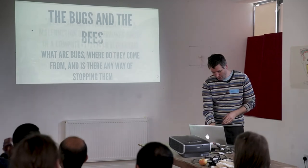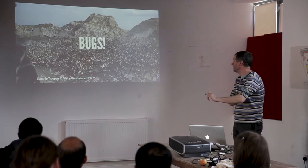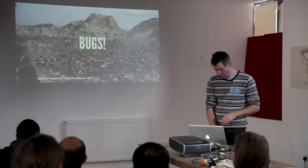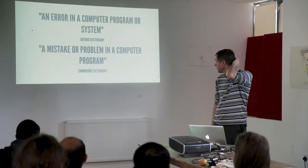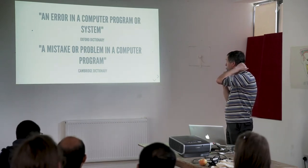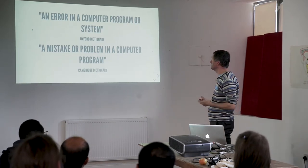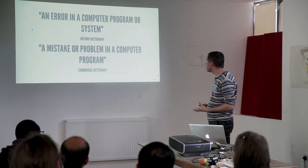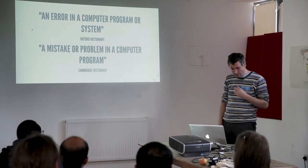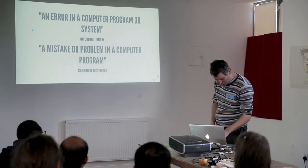So let's start with: what is a bug? Let's go straight to the dictionary because different people have different ideas for what a bug is. Oxford Dictionary: error in a computer program or system. Cambridge: mistake or problem in a computer program. So they're both focusing on there being something wrong. I like the Oxford Dictionary — it has 'system' as well. But let's go and look at another definition.